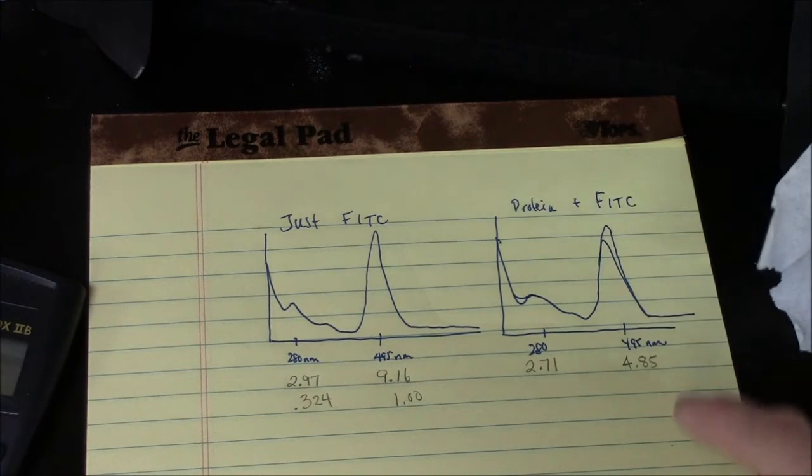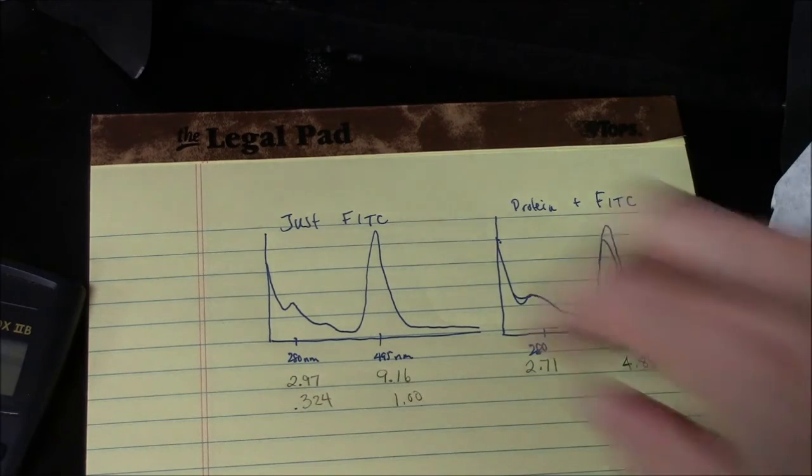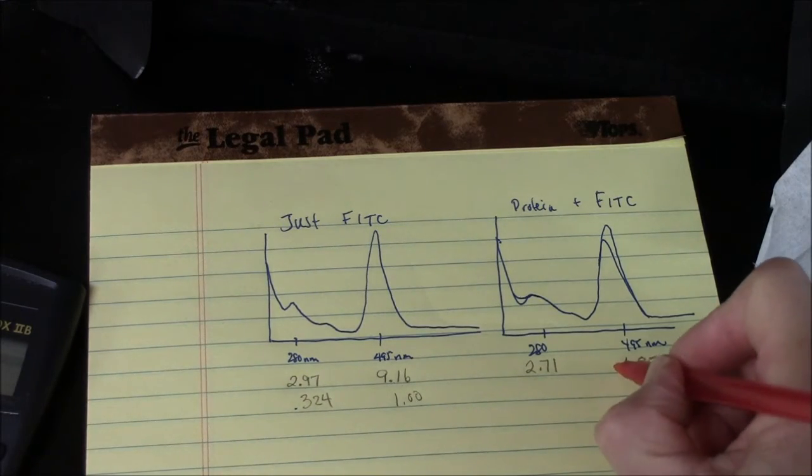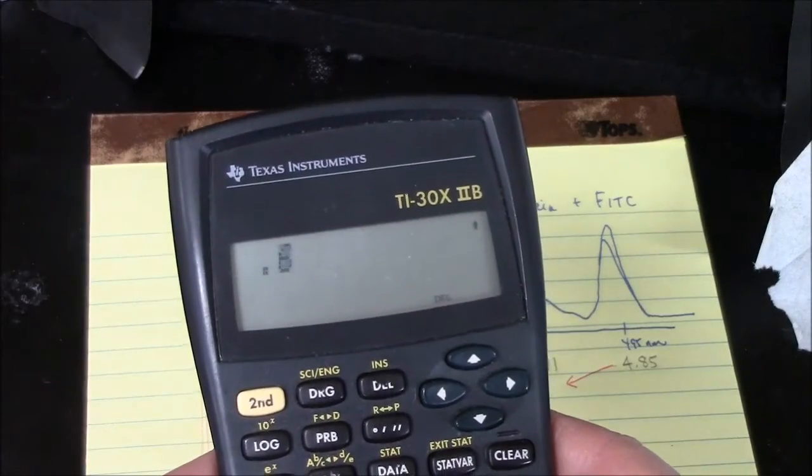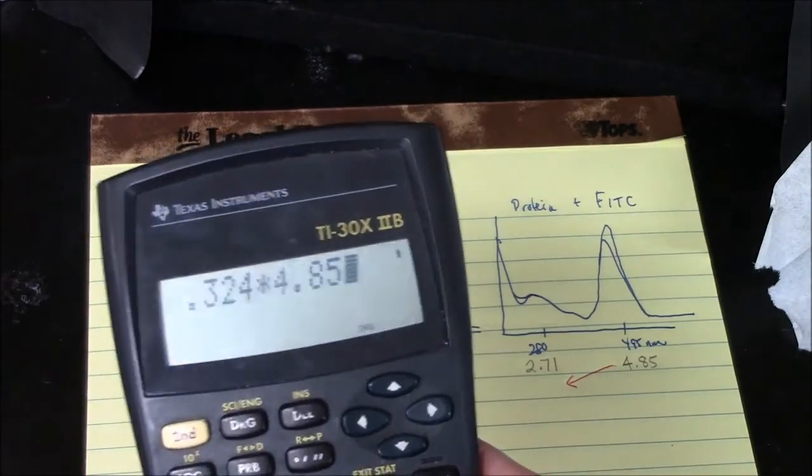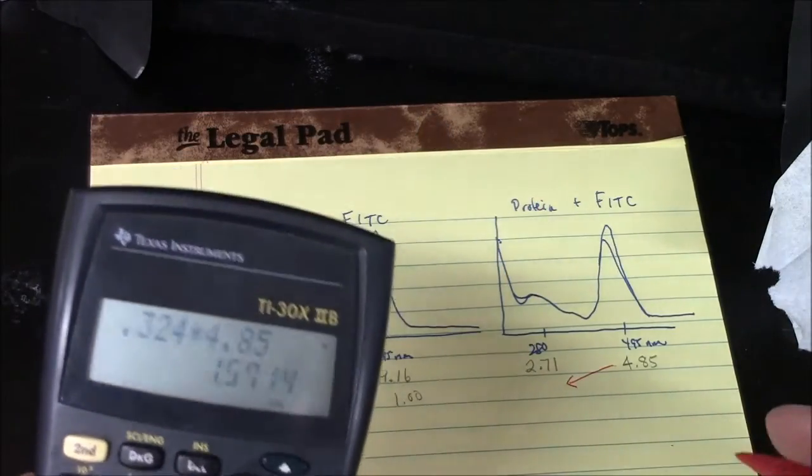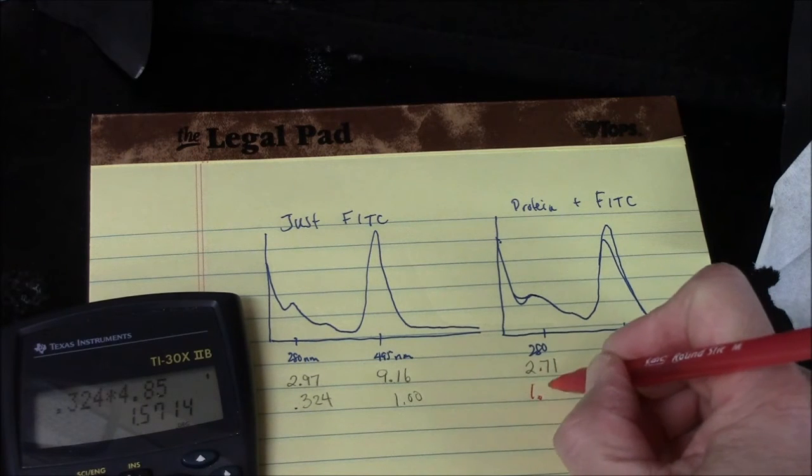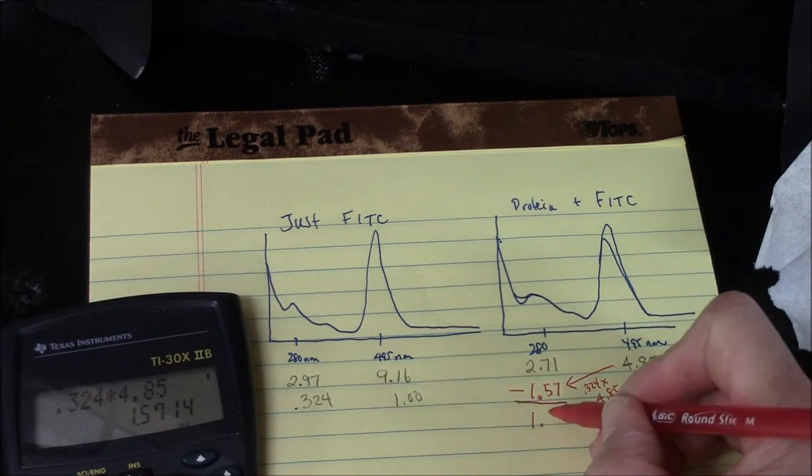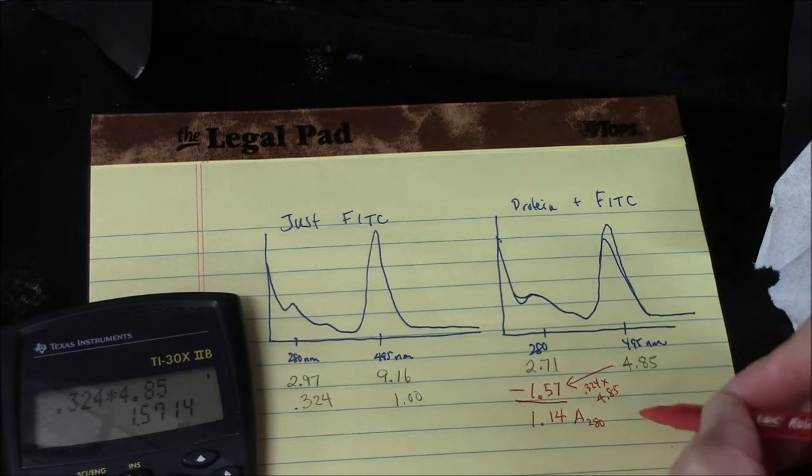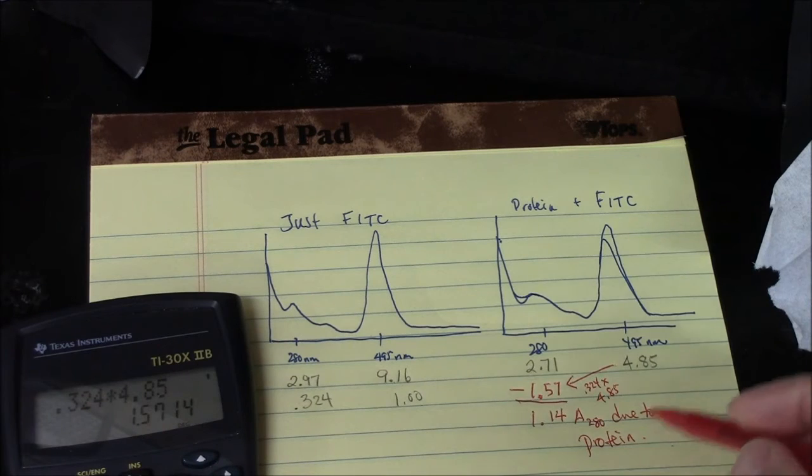When we did the protein plus FITC, the numbers were 4.85 for the absorbance at 495 nanometers and 2.71 for the absorbance at 280 nanometers. If we take 0.324 of the 4.85, in other words, multiply 0.324 times 4.85, we'll get the absorbance units at 280 nanometers due to the FITC. So that's 1.57. That leaves remaining 1.14 absorbance units at 280, which I can attribute to the protein. This is the key statement here.